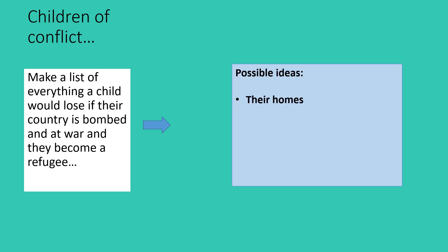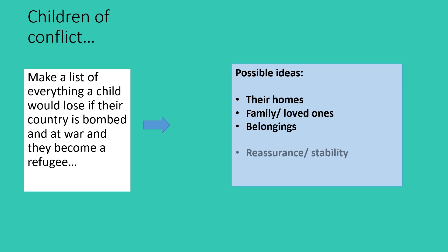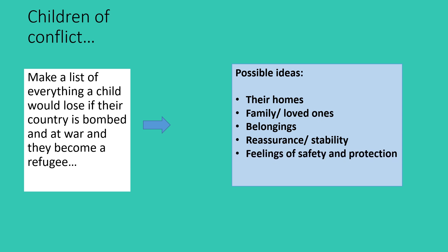Here are some possible ideas to help you. They would lose their home, most likely. They might lose family or loved ones. They might lose their belongings because they can't take them with them or they've been destroyed in bombing. Then they lose their reassurance — that stability of having the same home and environment to return to. They lose those feelings of safety and protection. One of the things they might also miss out on is regular schooling or chances to be part of an educational setting.